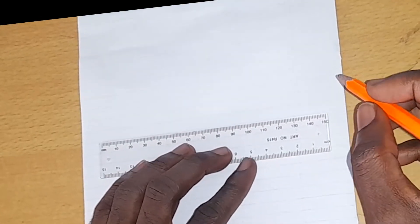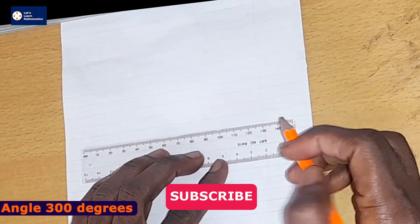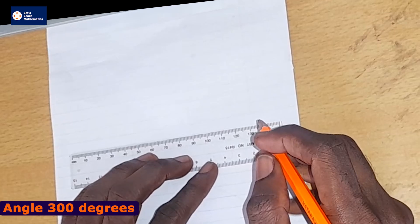All right, so now we want to create angle 300 degrees using the protractor. So to draw angle 300 degrees,